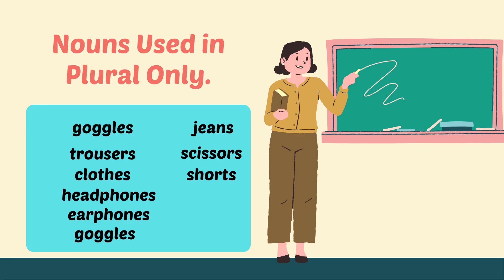Now let's look at some other examples of words that are always in plural form: goggles, trousers, clothes, headphones, earphones, jeans, scissors, shorts. So these are all words that are always in plural form.